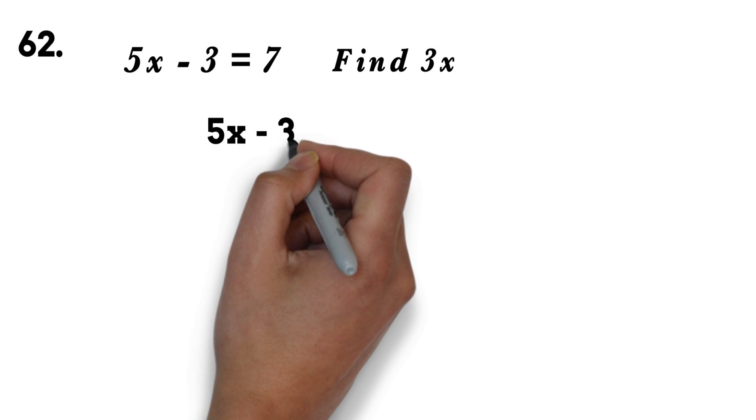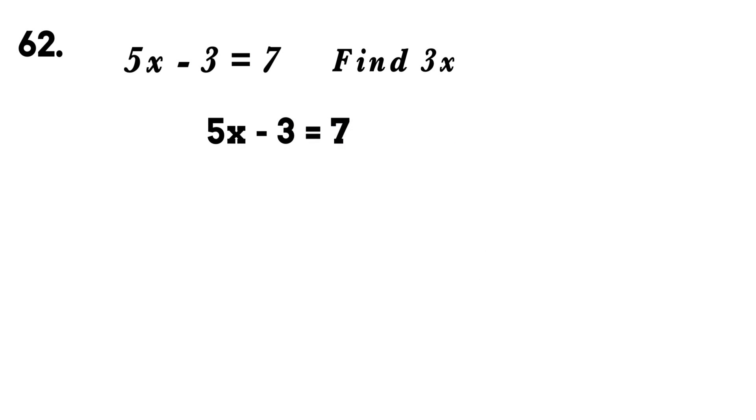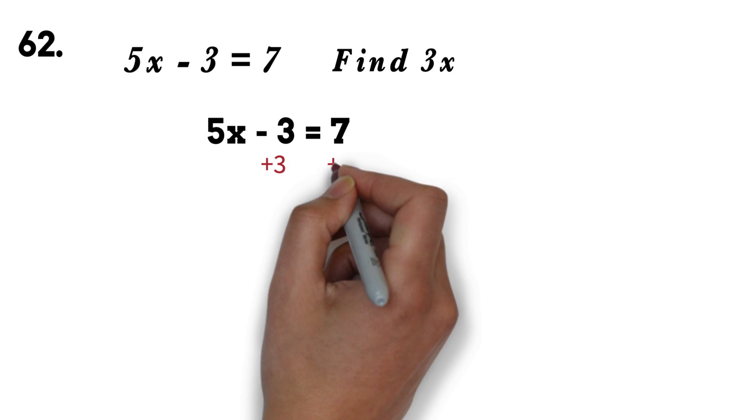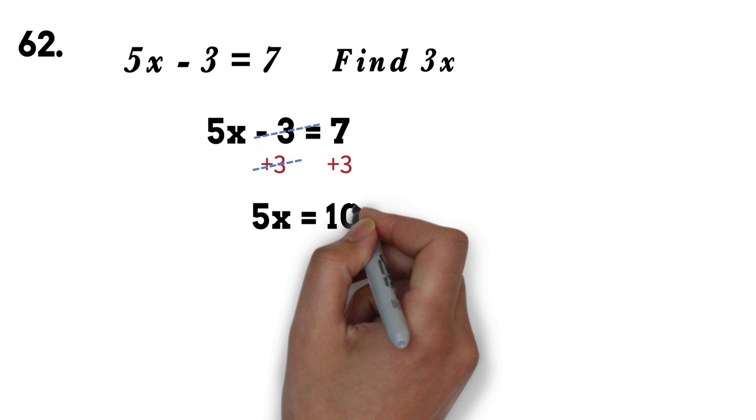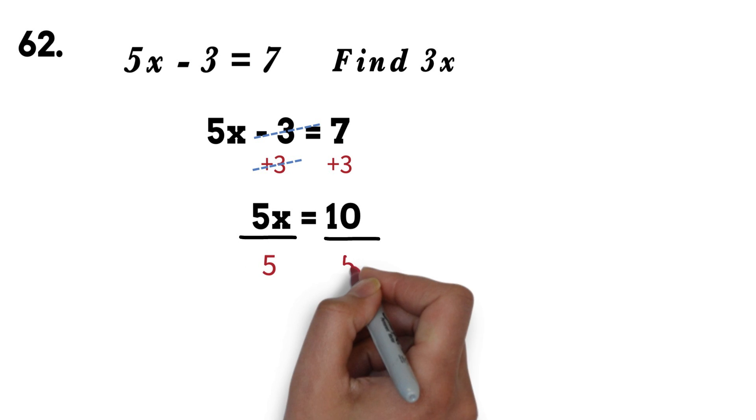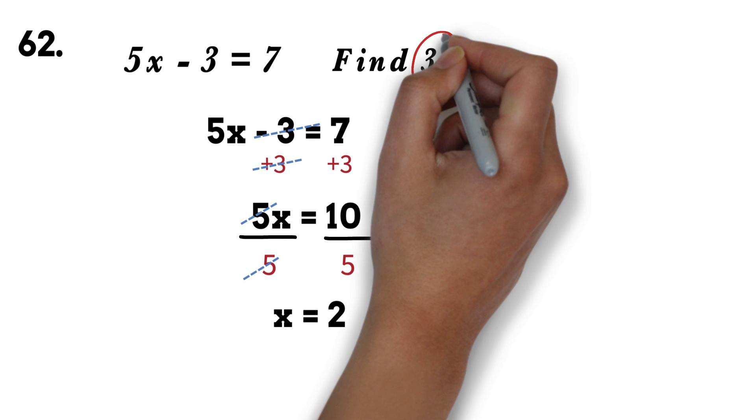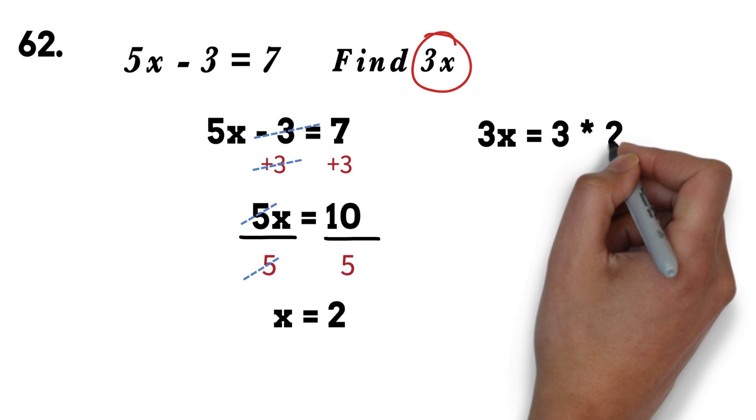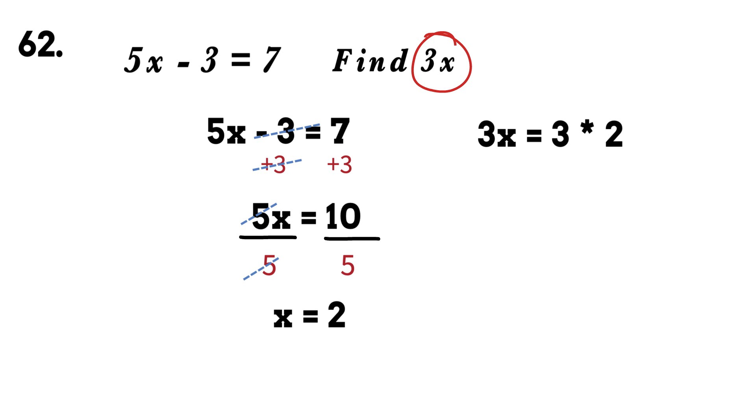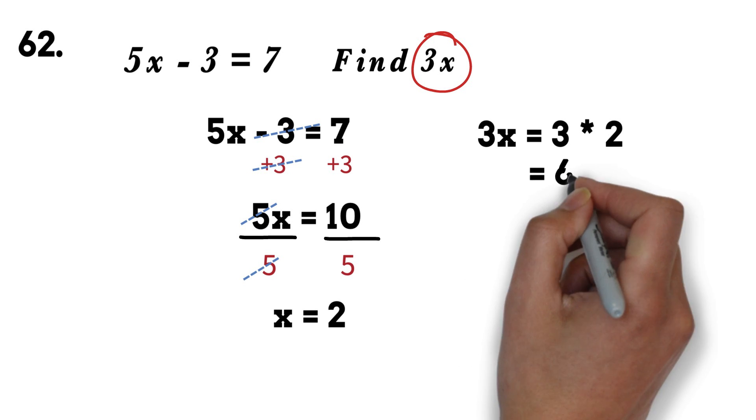Question 62. 5x minus 3 equals 7. Find 3x. We have a two-step equation. Add 3 to both sides. This will give us 5x equals 10. Divide both sides by 5. This will give us x equals 2. Some students choose 2 to be the answer. The question is asking us to find 3x. 3x equals 3 times 2 since x is 2. This will give us 6 as the final answer.